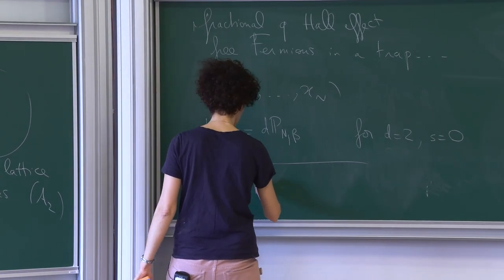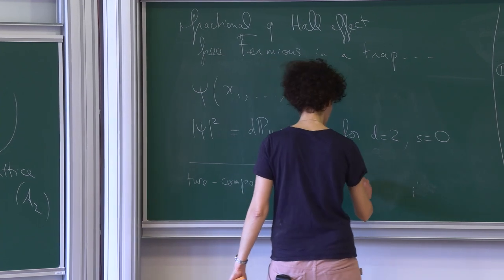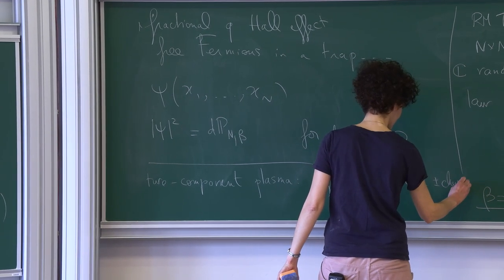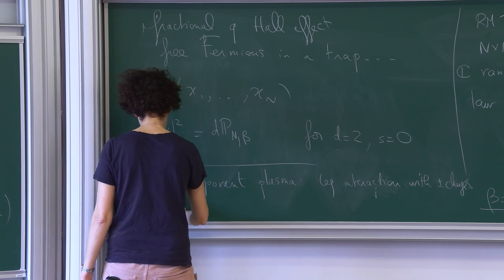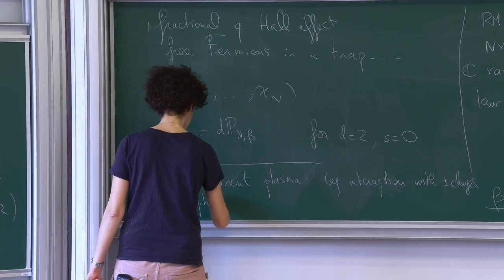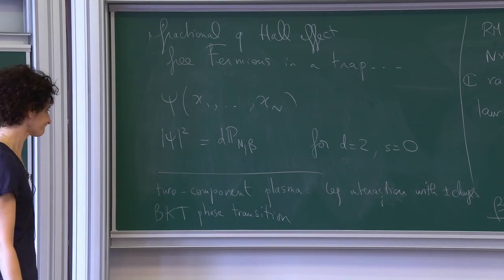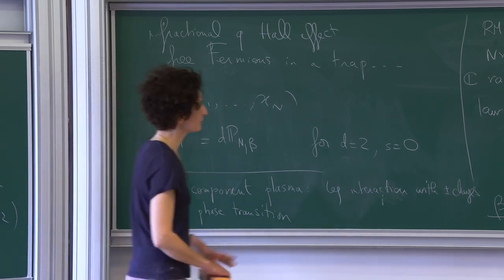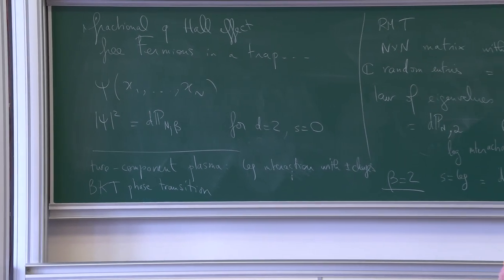There is also motivation from the two-component plasma — allowing plus and minus charges — with logarithmic interaction between ±1 charges. That's quite a different story, expected to exhibit a Kosterlitz-Thouless (BKT) phase transition. We are working on applying Coulomb gas ideas to study things like that. But for now, let's take a break.